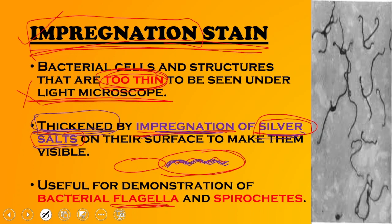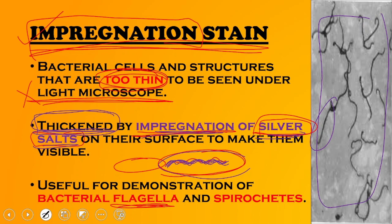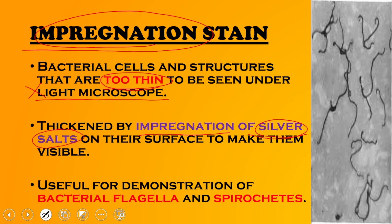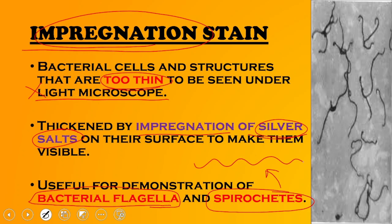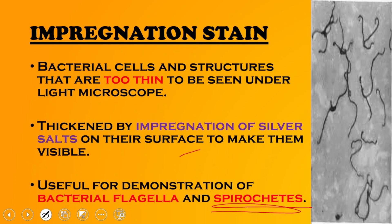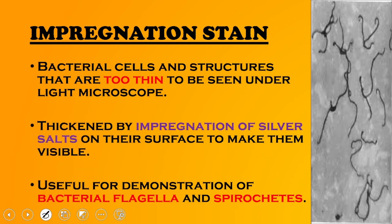After impregnation, thickening occurs and we can then appreciate the flagella, as shown in the image. Impregnation stain is used for bacterial flagella and spirochetes. Spirochetes are spiral, long, slender bacteria. Important members of spirochetes include Treponema pallidum, Borrelia, and Leptospira — all characterized as thin, slender, spiral, thread-like bacteria.